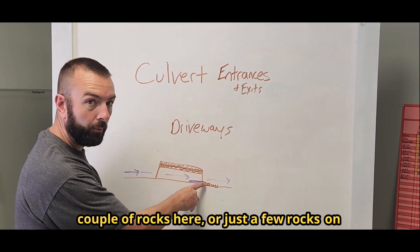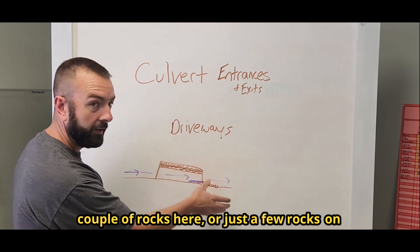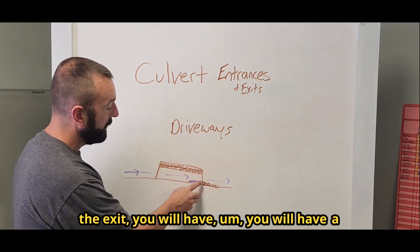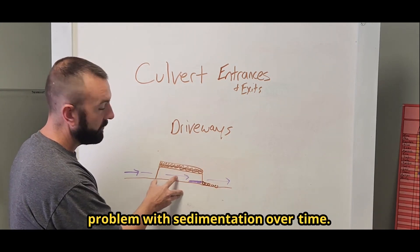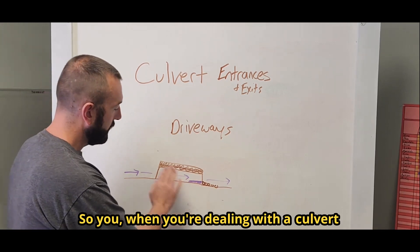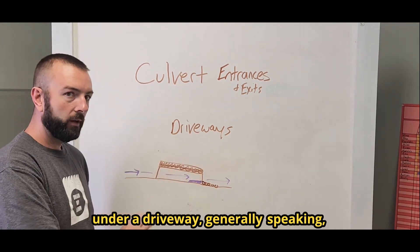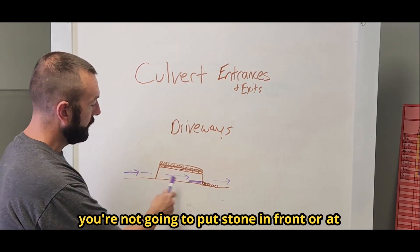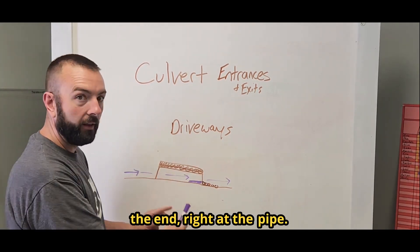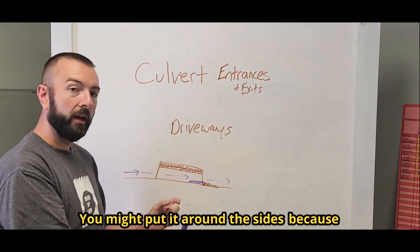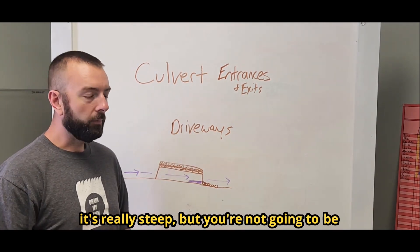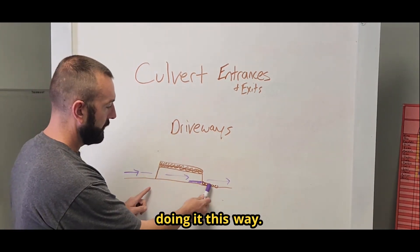Even out here, because what will happen is that will cause the sedimentation that we talked about all the way through here, all that sediment will hold up. If the water's going this way and you put a couple of rocks here or just a few rocks on the exit, you will have a problem with sedimentation over time. So when you're dealing with a culvert under a driveway, generally speaking, you're not going to put stone in front or at the end, right at the pipe. You might put it around the sides because it's really steep, but you're not going to be doing it this way.